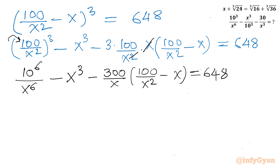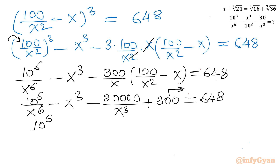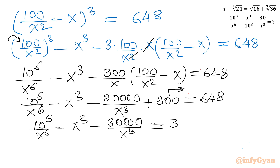Expanding the bracket fully: 10⁶/x⁶ − x³ − 30000/x³ + 300 = 648. Moving 300 to the right-hand side: 10⁶/x⁶ − x³ − 30000/x³ = 348.